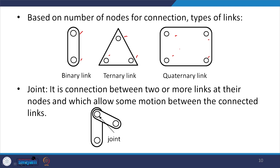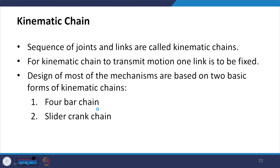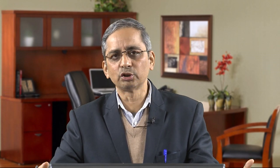Joints are connections between two or more links at their nodes, allowing some motion between connected links. A sequence of joints and links is called a kinematic chain. For a kinematic chain to transmit motion, one link has to be fixed. By fixing different links of a mechanism we can get the inversions of that mechanism.